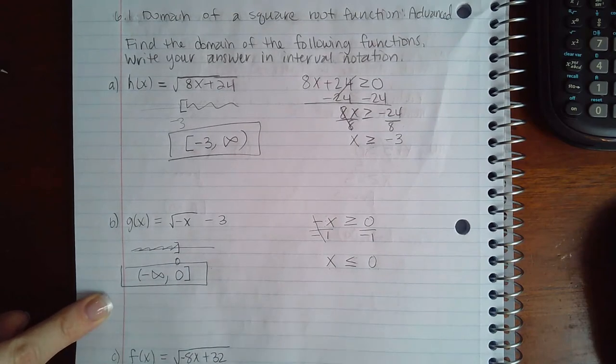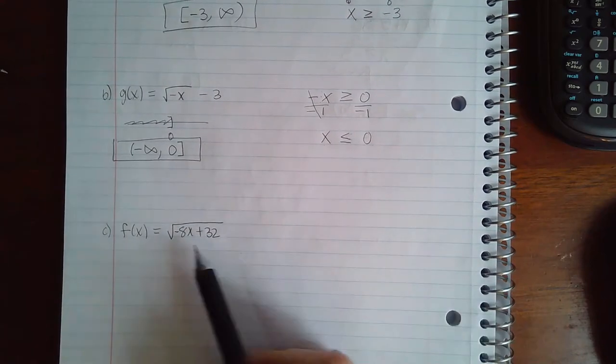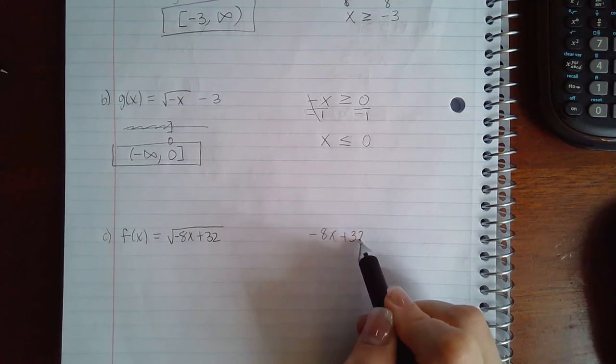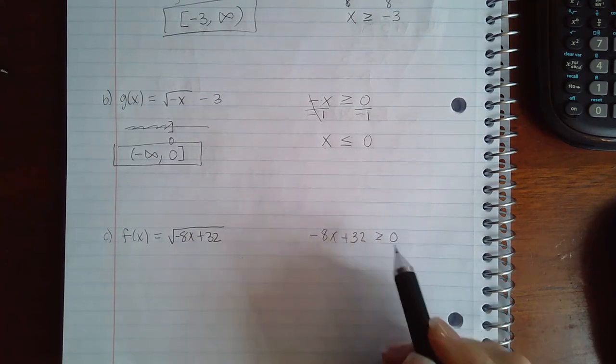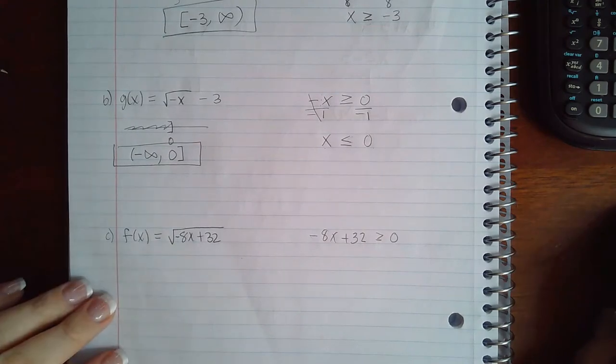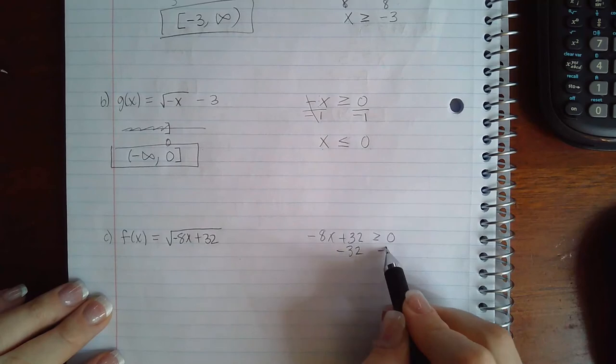Now if I take this radicand and set that greater than or equal to zero, we're going to solve by subtracting 32 on both sides.